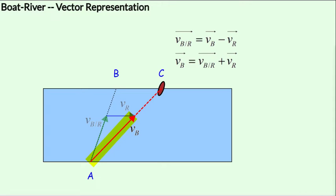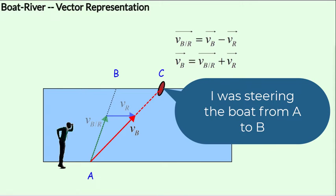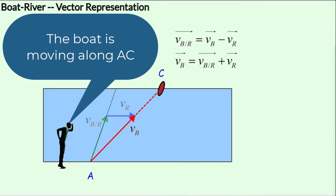Now this resultant vector, VB, represents the velocity of the boat with respect to the ground. So this is the actual path taken by the boat as seen by a stationary observer on the ground. The boatman is steering the boat from A towards B, but the stationary observer sees the boat moving along line AC.